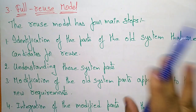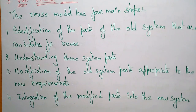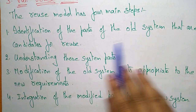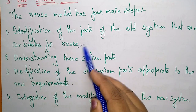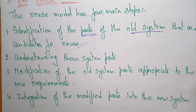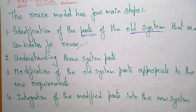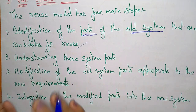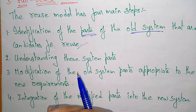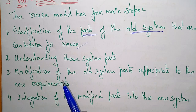The reuse model has four main steps. First is the identification of the parts of the old system that are candidates for reuse. You have to identify the parts of the old system which may be useful for reuse — some part of the code, hardware, or software, whatever it may be, that you can transfer and reuse.